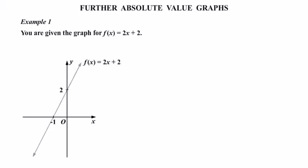We'll take a look at some further absolute value graphs in this lesson, and we'll jump straight in with an example. We're given the graph for f(x) = 2x + 2. In part A we're asked to sketch y = |2x + 2|, so we're finding the absolute value of the whole function.